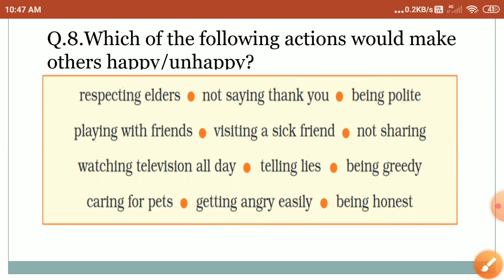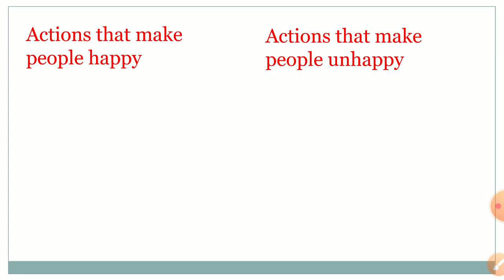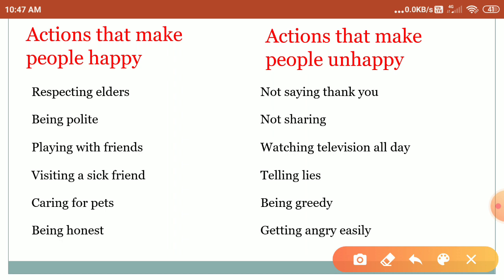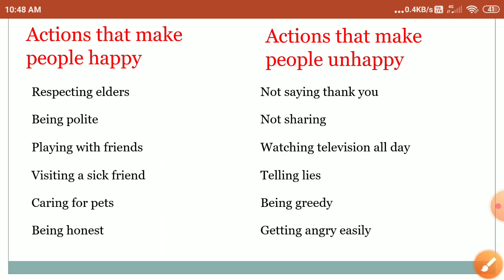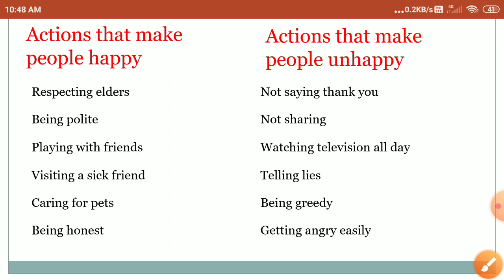So we have to write it like this. Actions that make people happy: respecting elders, being polite, playing with friends, visiting a sick friend, caring for pets, being honest. Actions that make people unhappy: not saying thank you, not sharing, watching television all day, telling lies, being greedy, getting angry easily. Thank you students, do these question answers.